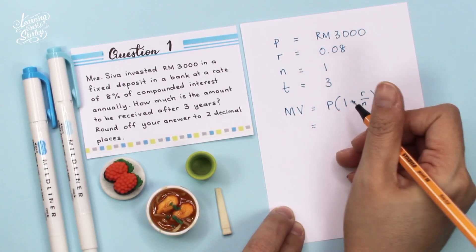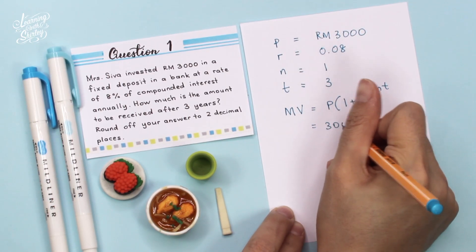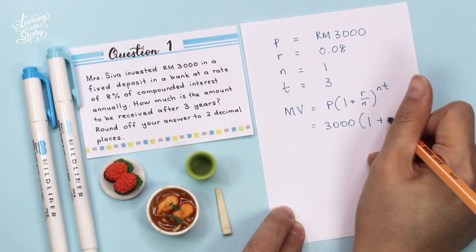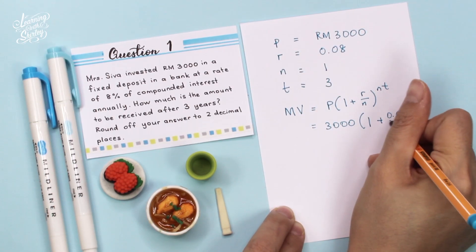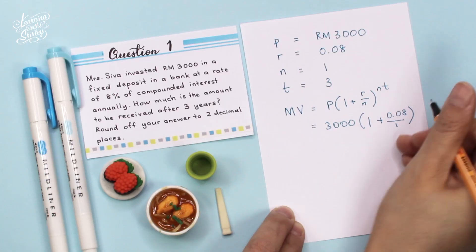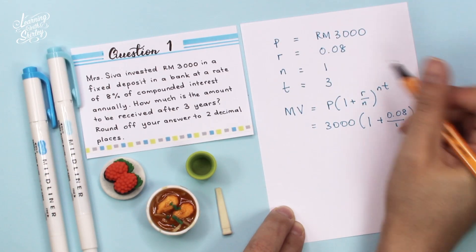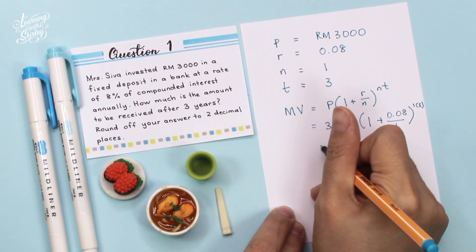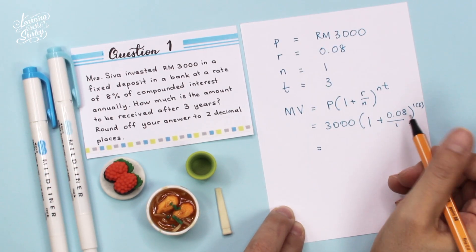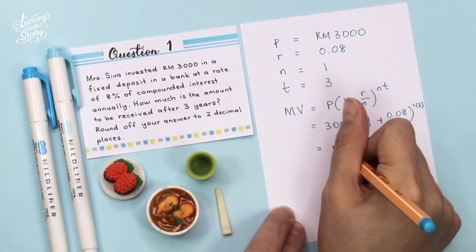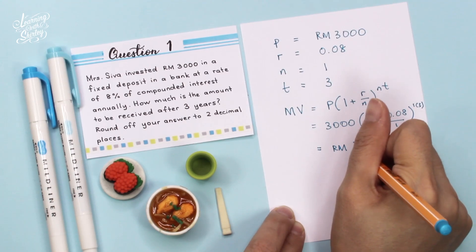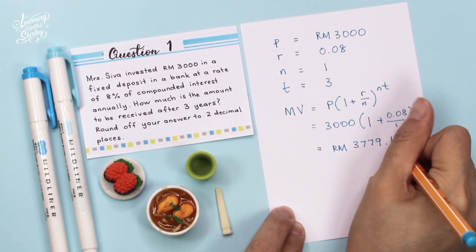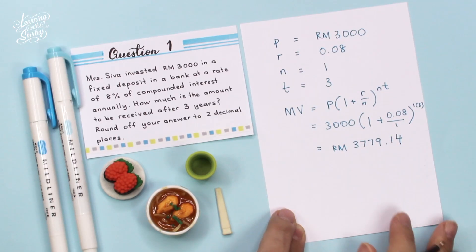Principal is 3,000. Then bracket 1 plus R is 0.08, over N which is 1, to the power of NT which is 1 times 3. We press the calculator and we'll get RM3,779.14. That's the answer.